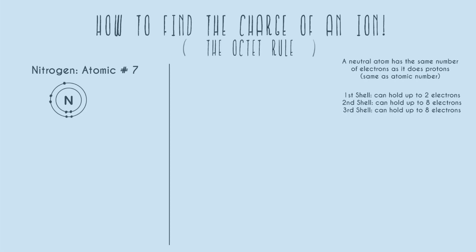Let's define another important concept: valence electrons. The valence shell is the outermost shell in use, and valence electrons are just the electrons in that valence shell. For nitrogen, we've used two shells in total, so the second one is our valence shell.